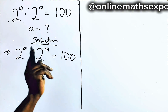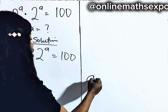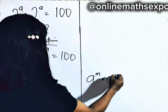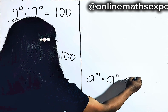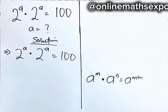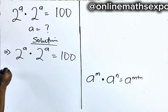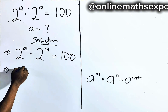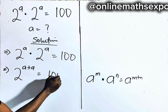Now what do you do? Just remember, for every a to the power of m multiplied by a to the power of n, it is a to the power of m plus n. So you are free to add the powers when multiplying. So we have 2 to the power of a plus a is equal to 100.